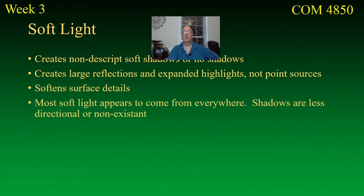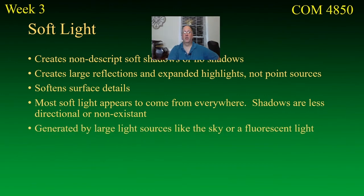Most soft light appears to come from everywhere. When the sun is up on a cloudy or overcast day and it's a white sky, the sun itself doesn't really matter where it is — the light is really coming from the whole sky. The shadows aren't directional; in fact, you don't even have shadows, or if you do they'll be very soft and nondescript. Soft lights are generated by large light sources, like the sky or fluorescent lighting.